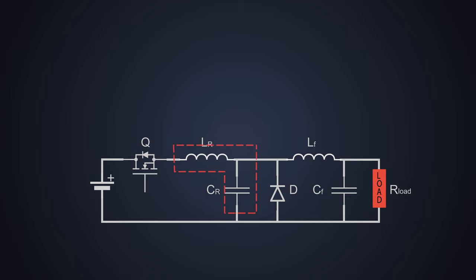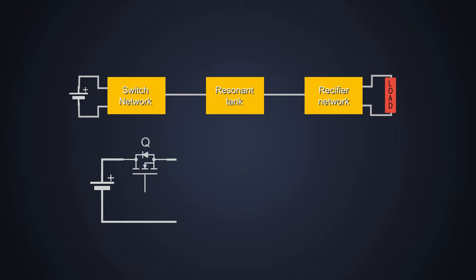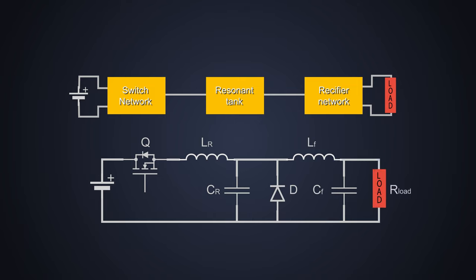The PWM strategy of a converter is designed in such a way that the resonant circuit goes into resonance. Every resonant converter consists of three blocks: switching network, resonant circuit, and finally the rectifier or filter circuit. In the case of resonant buck converter, this is the switching network, this is the resonant circuit, and this is the rectifier/filter circuit.